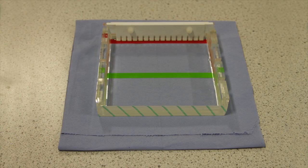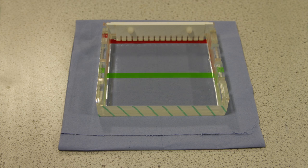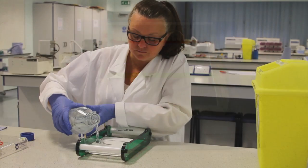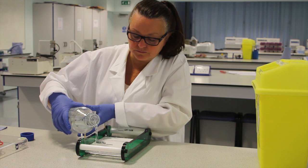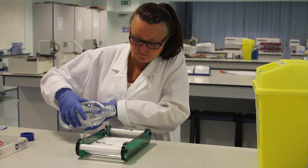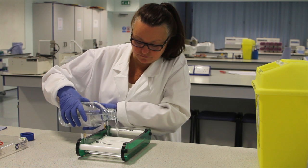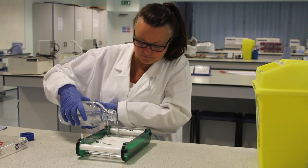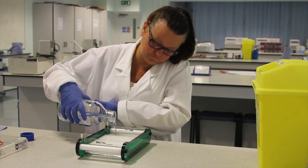Leave the gel to set at room temperature. This may take 20 to 30 minutes. Once the gel is set, prepare the gel running tank by filling the chambers with a running buffer. This will either be the TAE or TBE buffer used to prepare the gel. Take care not to overfill the tank.